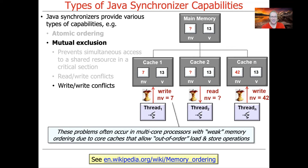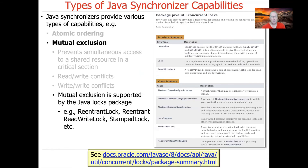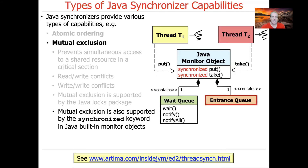Java allows weakly ordered memory to take advantage of multi-core hardware, and if you don't want the non-determinism that comes from that, you need to use synchronizers. Mutual exclusion is supported in Java largely through the java.util.concurrent.locks package, giving us ReentrantLock, ReentrantReadWriteLock, StampedLock, and so on. Mutual exclusion is also supported by the synchronized keyword through Java's built-in monitor object capability — synchronized methods and synchronized statements.